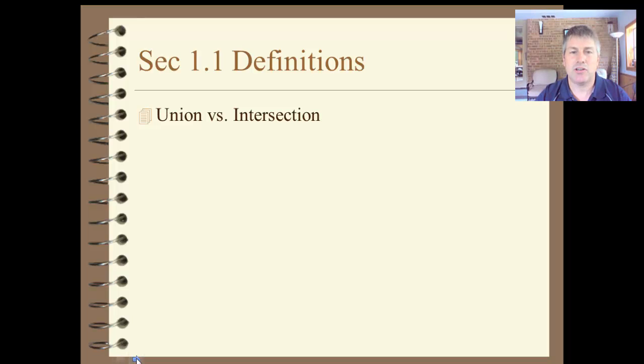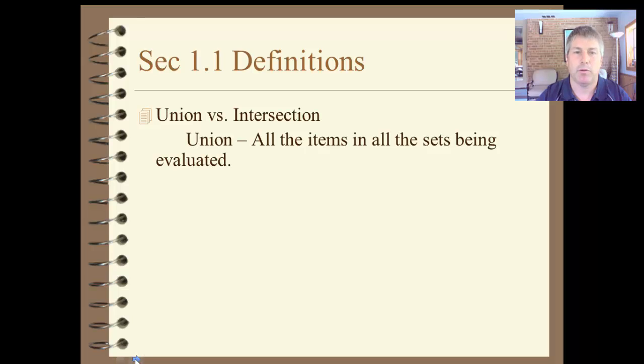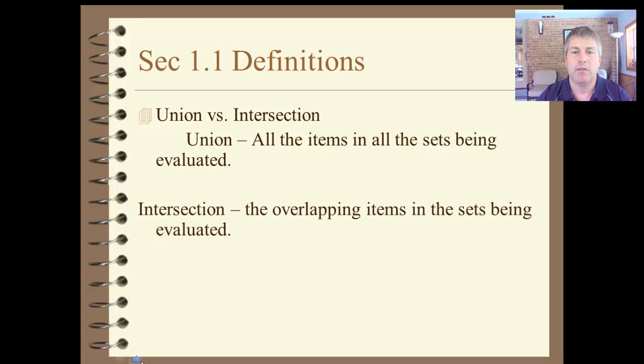Union and intersection. We've seen this before. Union is all items in all the sets being evaluated. Everything gets represented. That's union. So intersection, that's simply overlap. The overlapping items in the sets being evaluated. Or what's common to both. Union, everyone gets represented. Intersection, like the intersection of 35th and Wisconsin, just that overlap.